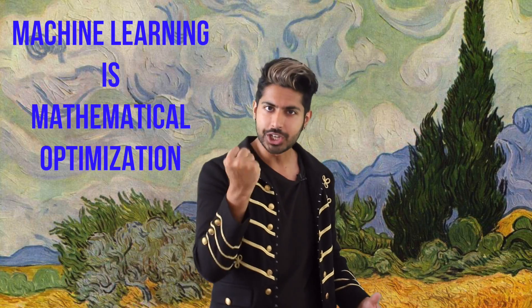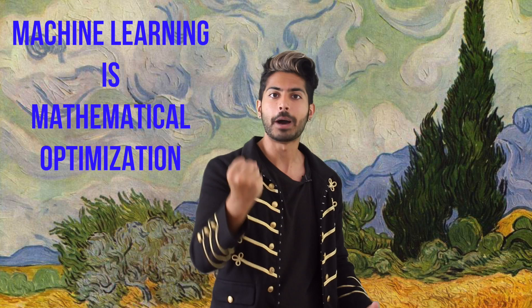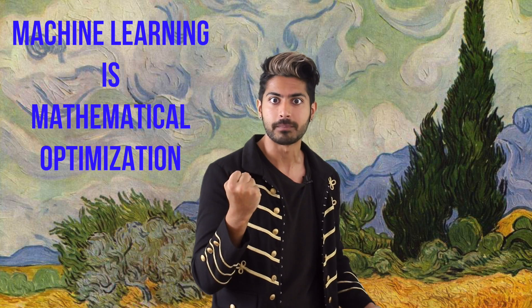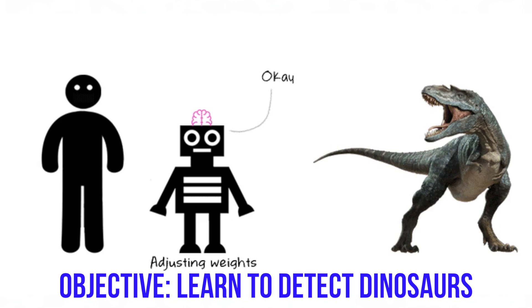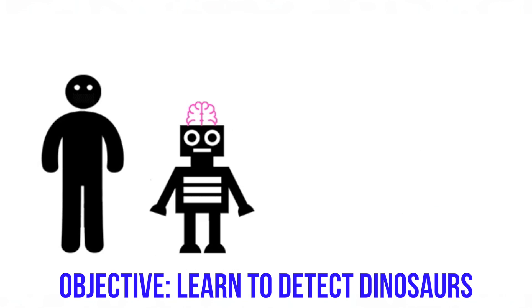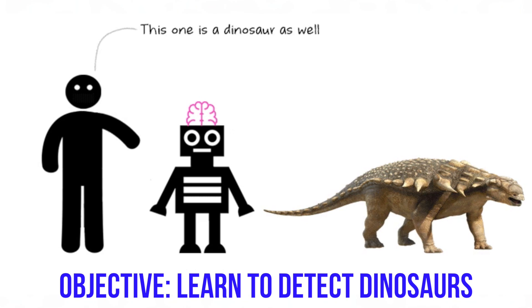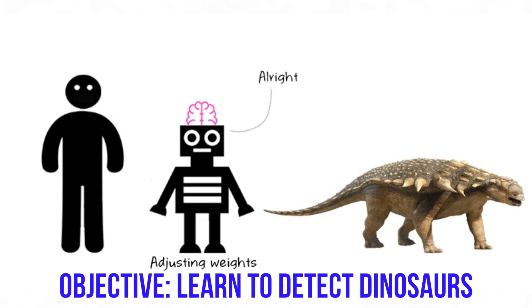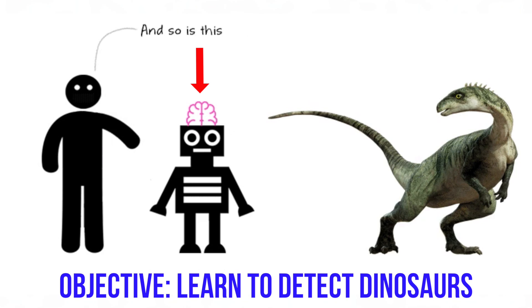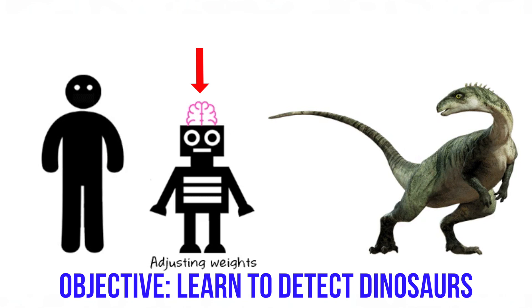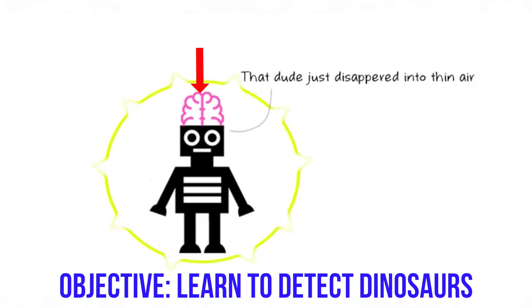So where do we start? At its core, machine learning is all about mathematical optimization. This is a way of thinking — every single problem can be broken down into an optimization problem. Once we have some dataset that acts as our input, we'll build a model that uses that data to optimize for an objective, a goal that we want to reach.